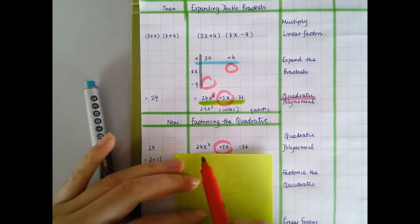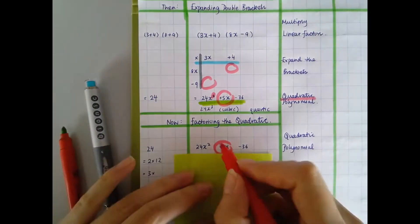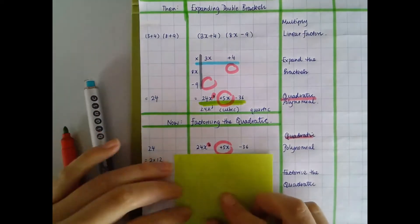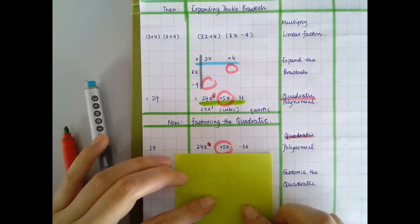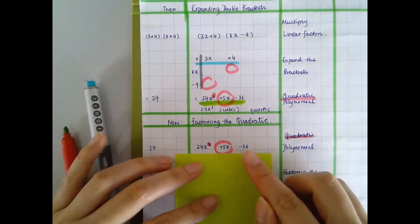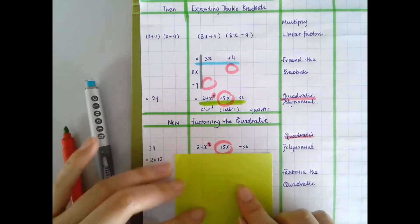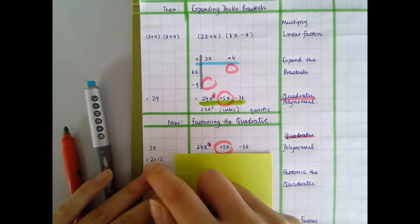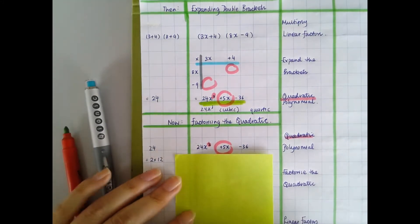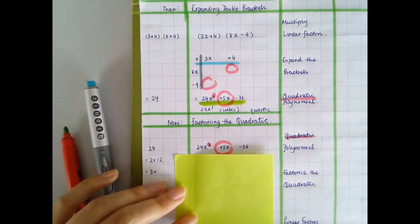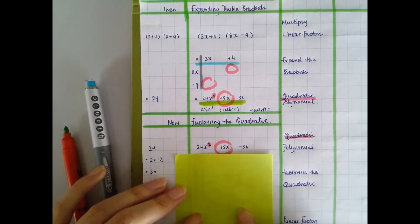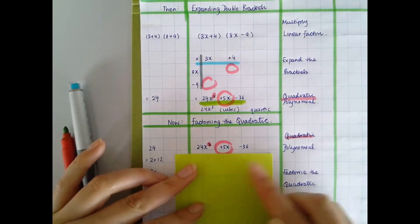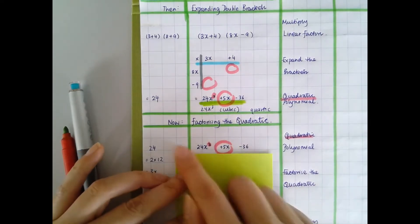We have here a quadratic polynomial, and now I want to find out what multiplies with what to give this quadratic polynomial. For example, 24: if I factorise it, that's 2 multiplied by 12, or 3 multiplied by 8, or 4 multiplied by 6. But what factor multiplied by which factor gives me this quadratic polynomial?